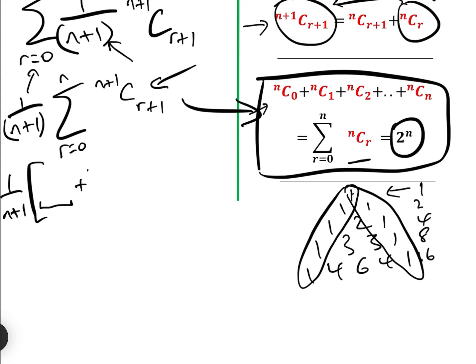We have add n plus 1 choose 1, which is putting r equals 0 in there, add n plus 1 choose 2, add da da da da. And let's go all the way up to n, we have n plus 1 choose n plus 1.